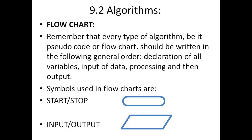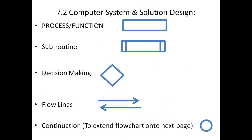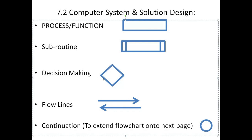Every algorithm, whether pseudocode or flowchart, should follow this general order: first, declare all variables; then take input from the user — all inputs must be accompanied by prompts; then process the data by applying formulas, logic, or calculations; and finally output the calculated values. Flowchart symbols include: an ellipse for start/stop, a parallelogram for input/output, a rectangle for processes, a rectangle with double sides for subroutines or predefined functions, a diamond for decision-making, flow lines to show data flow, and a continuation symbol to extend the flowchart to the next page.